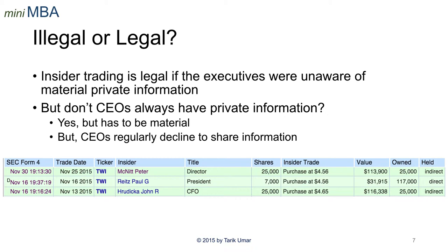Now, given that insiders have this informational advantage over outsiders, how is this legal? How are they allowed to make these trades? Well, insiders are allowed to make trades as long as they are unaware of what's called material private information. Private information means it has not been disseminated widely through a newswire service in the form of a press release. Material information means it would move the stock price in a material way upon becoming known. Examples include a pending acquisition of the company at a high price, a lost customer who makes up a large percent of sales, or a pending labor union strike that would disrupt production at a factory — all of which would have dramatic implications for stock price in the short term.